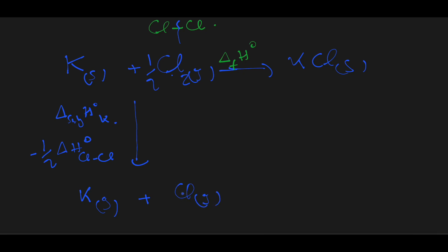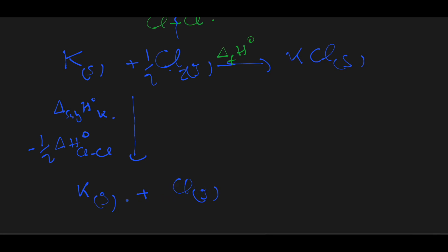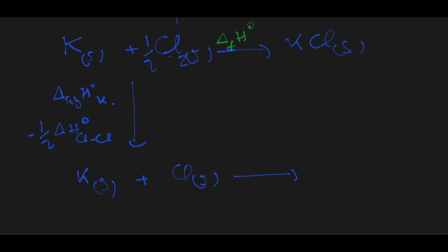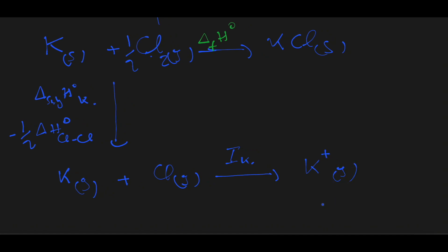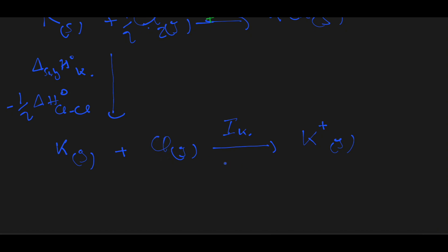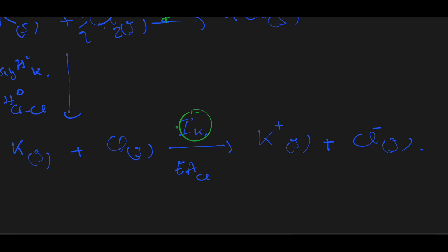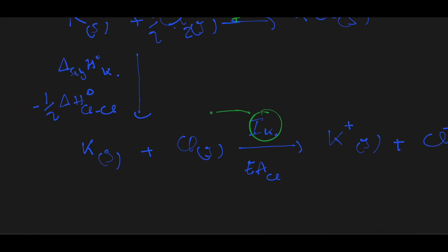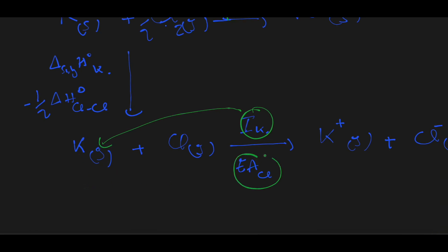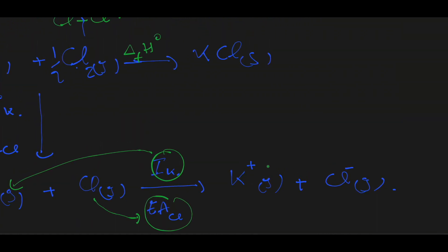Now we have Cl in atomic state. As a second step, we need to ionize both elements. To ionize potassium, we provide an energy called the ionization energy of potassium to form ionic K⁺ in gaseous state. To ionize the chlorine atom, we provide an energy called the electron affinity of chlorine to form Cl⁻ in gaseous state. The ionization energy is the energy needed to remove one electron from potassium, and the electron affinity of chlorine is the energy needed for chlorine to accept one electron.